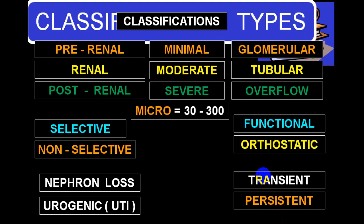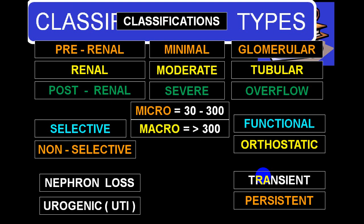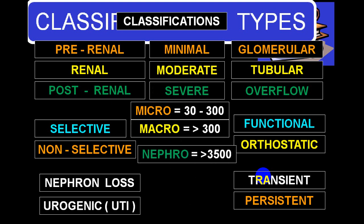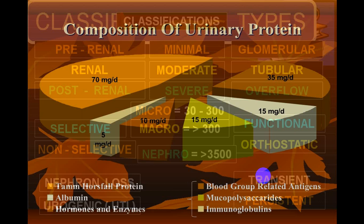Microalbuminuria means between 30 to 300 milligram per day. Macro means more than 300 but less than 3500, and the nephrotic variety is more than 3500 milligram per day.